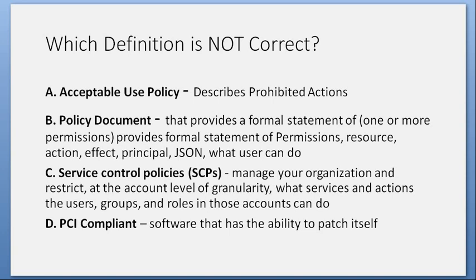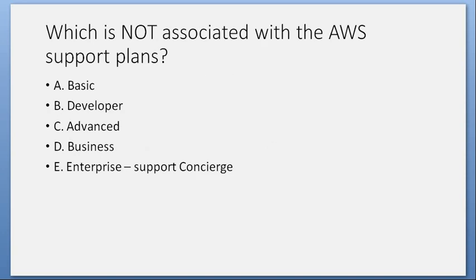Which is not associated with the AWS support plans? A. Basic. B. Developer. C. Advanced. D. Business. E. Enterprise support concierge. Answer: C. Advanced — that is not one of the AWS support plan tiers.